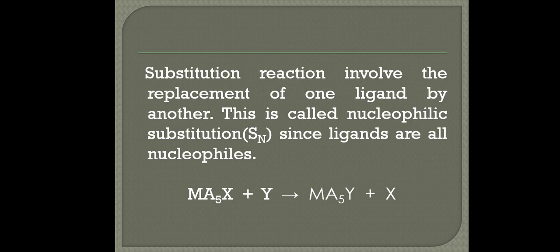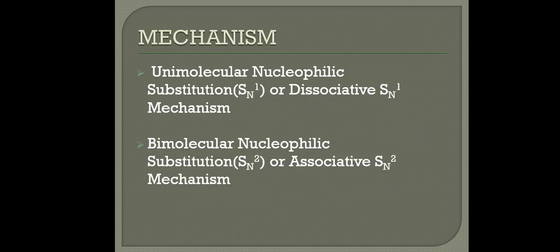There are several mechanisms by which this reaction occurs, but we shall consider only two main types of mechanism. The most common mechanisms are unimolecular nucleophilic substitution, commonly known as SN1 or dissociative SN1 mechanism, and the other is bimolecular nucleophilic substitution, commonly known as SN2 or associative SN2 mechanism.